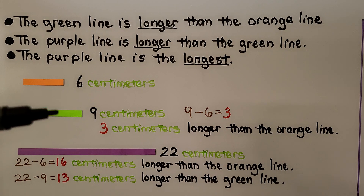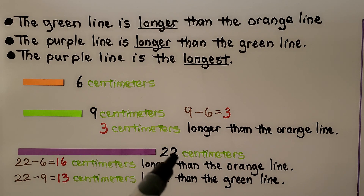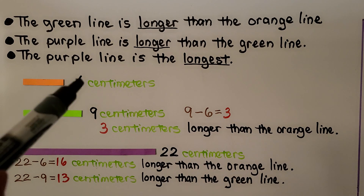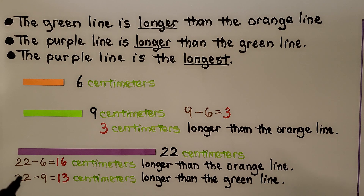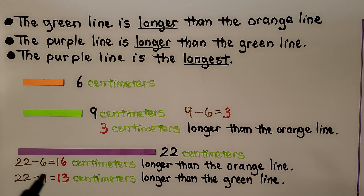To compare the purple line to the orange line, we do 22 centimeters minus 6 centimeters — that's 16 centimeters, so the purple line is 16 centimeters longer than the orange line. To compare the purple line to the green line, we do 22 minus 9, which equals 13 centimeters. The purple line is 13 centimeters longer than the green line.